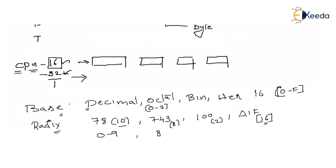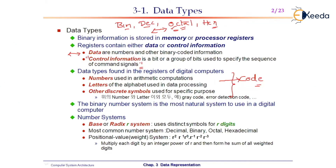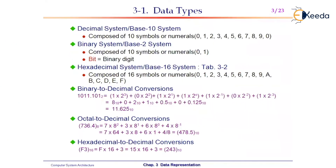Let us understand the other number systems and data formats that can be implemented and understood by the computer system. The most common number systems are decimal, binary, octal, and hexadecimal. Decimal base-10 is composed of 10 symbols (0–9); binary has just 2 symbols (0 and 1); hexadecimal has 16 symbols.